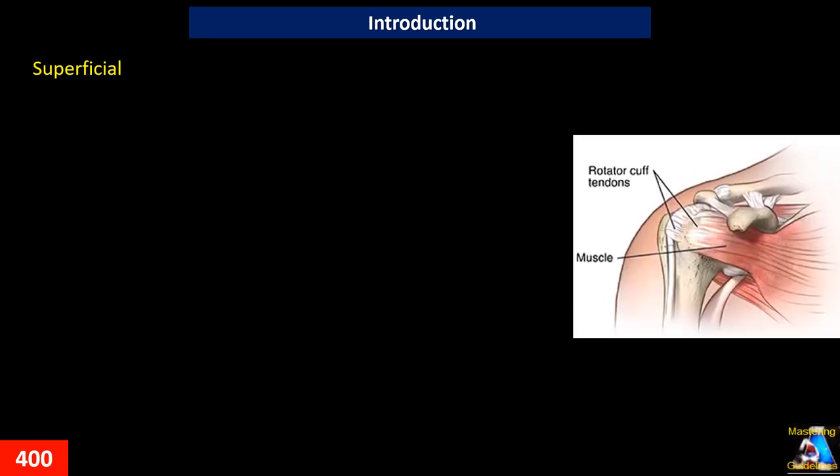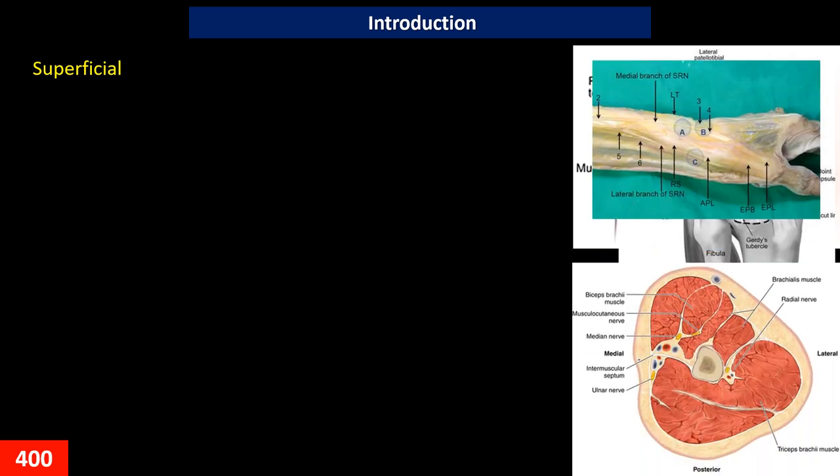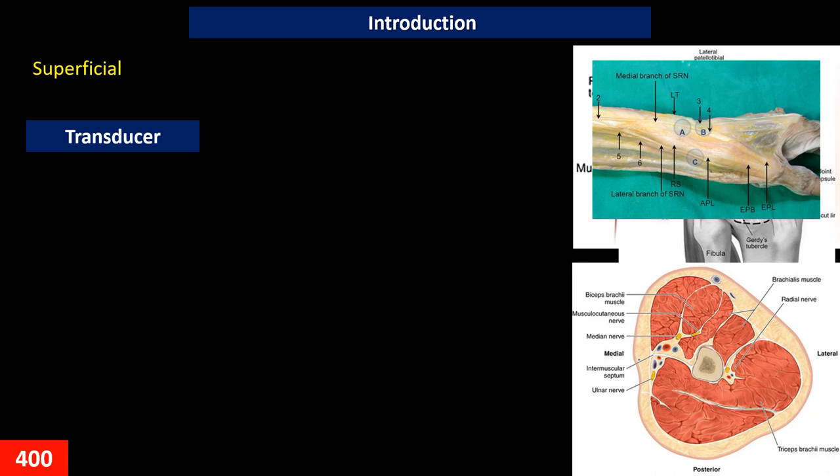The musculoskeletal structures are very specific and unique, and most of the time they are superficial. This allows us to use the highest frequency and approach the target organ to create high-quality images. With the development of modern machines and technology, musculoskeletal ultrasound plays a big role and in most cases is the first choice tool for diagnosis of musculoskeletal disorders. We are dealing with muscle, tendon, ligament, nerve, vascular structures, fascia, and capsule.